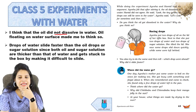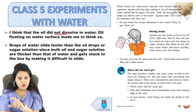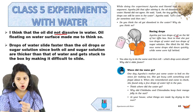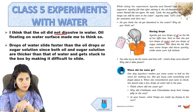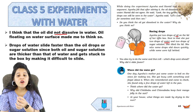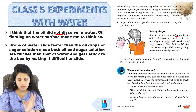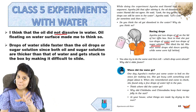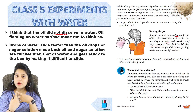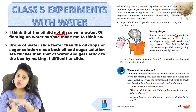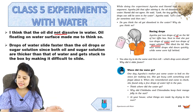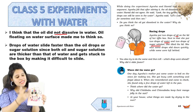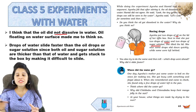Next, we have racing drops. Aisha put two drops of oil on the lid of a tiffin box. Next to that, she put two drops of water and two drops of sugar solution. She tilted the lid and saw some drops slide down quickly while some were left behind.